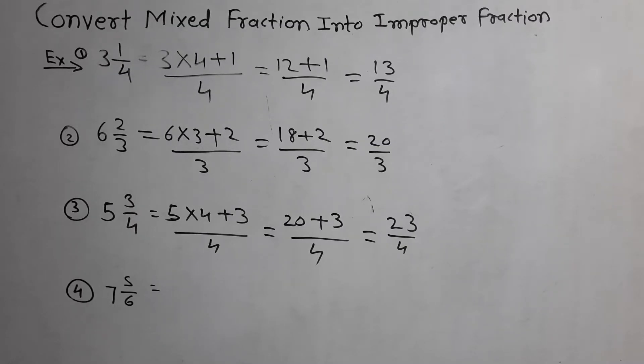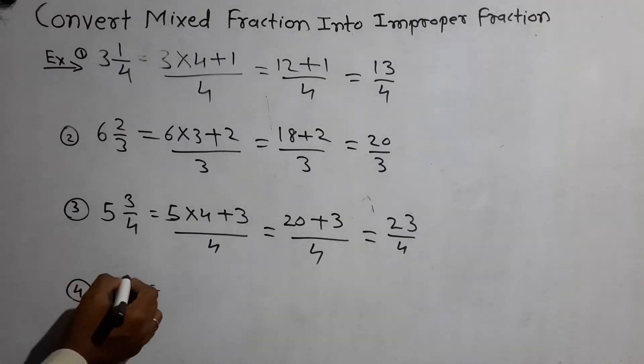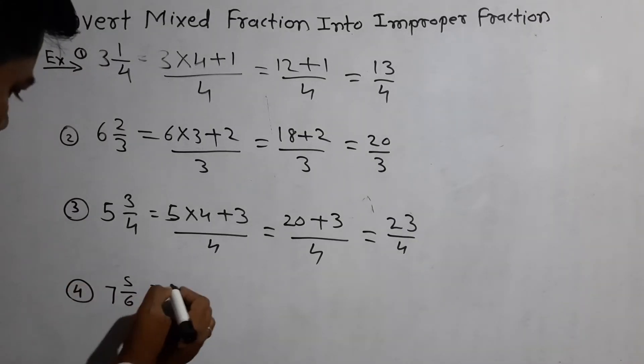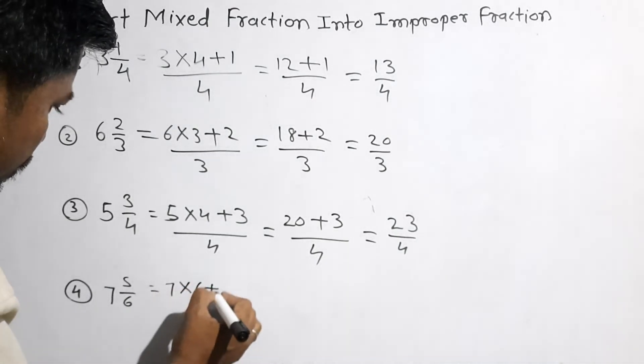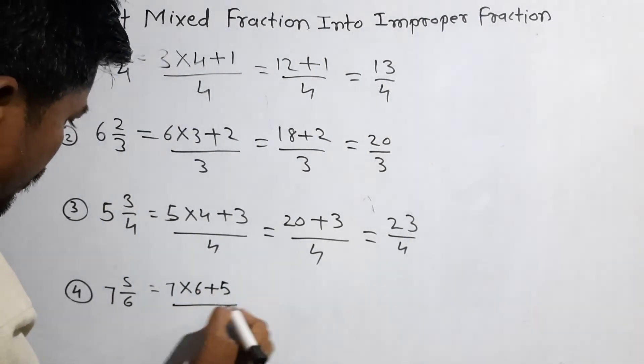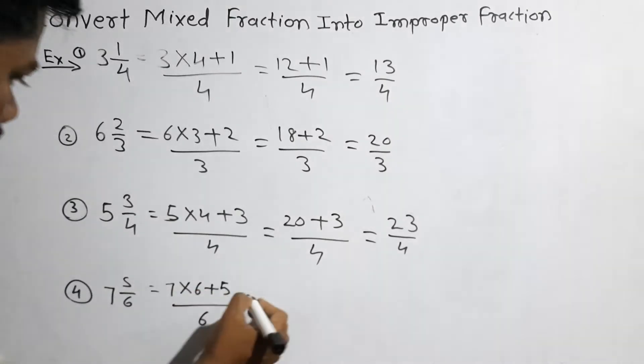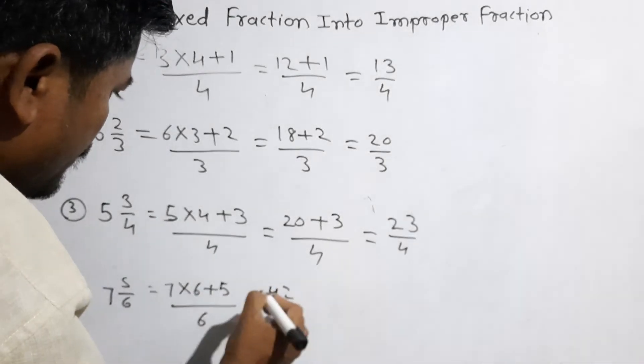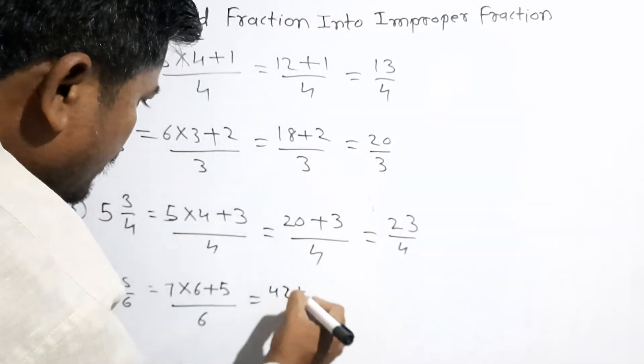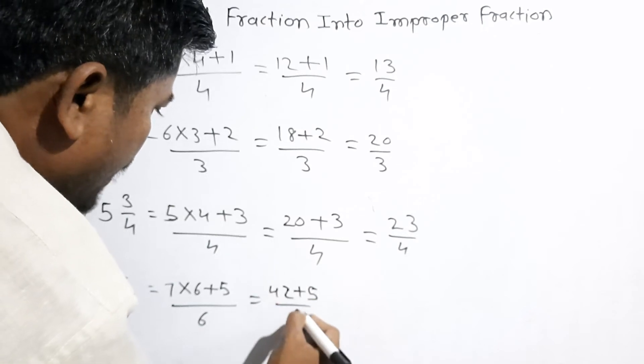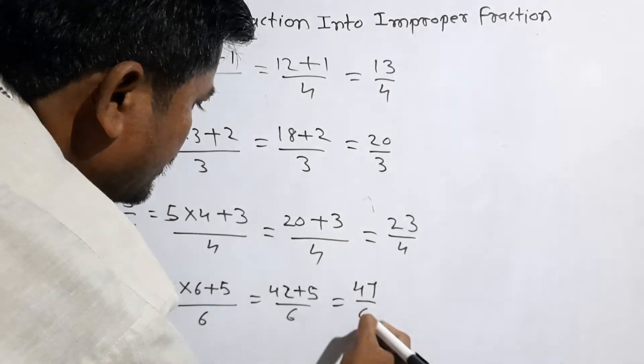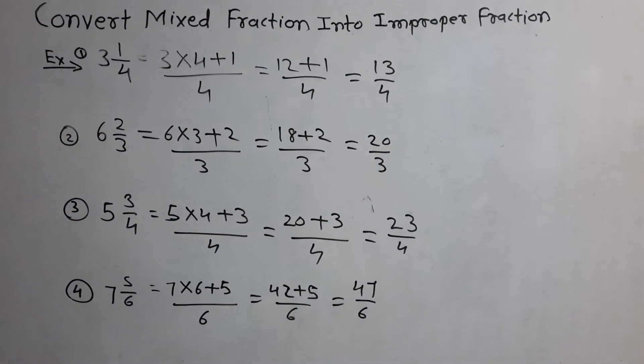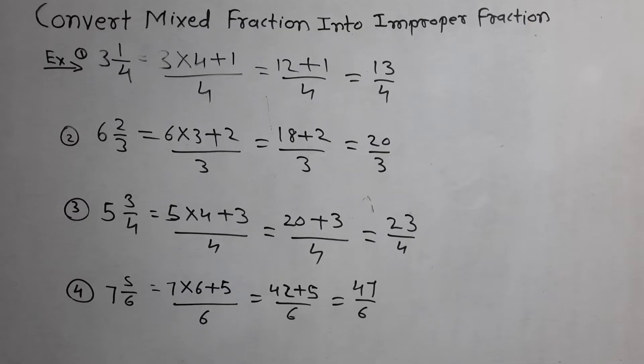Last example is 7 and 5 by 6. 7 into 6 plus 5 by 6. 7 sixes are 42 plus 5 by 6 is equal to 47 by 6, the improper fraction of 7 and 5 by 6.